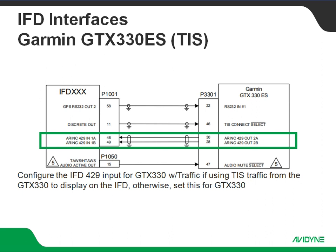And then we've got a pair of ARINC 429s coming back to the IFD from the GTX 330. There are a couple of options here depending on what we want this installation to do and how we want it to behave. So assuming we want to use the TIS traffic information coming from the GTX 330 to display on the IFD as its traffic source, we would set this for GTX 330 with traffic. The other option is just straight GTX 330, and that assumes we've got some other traffic source on board.